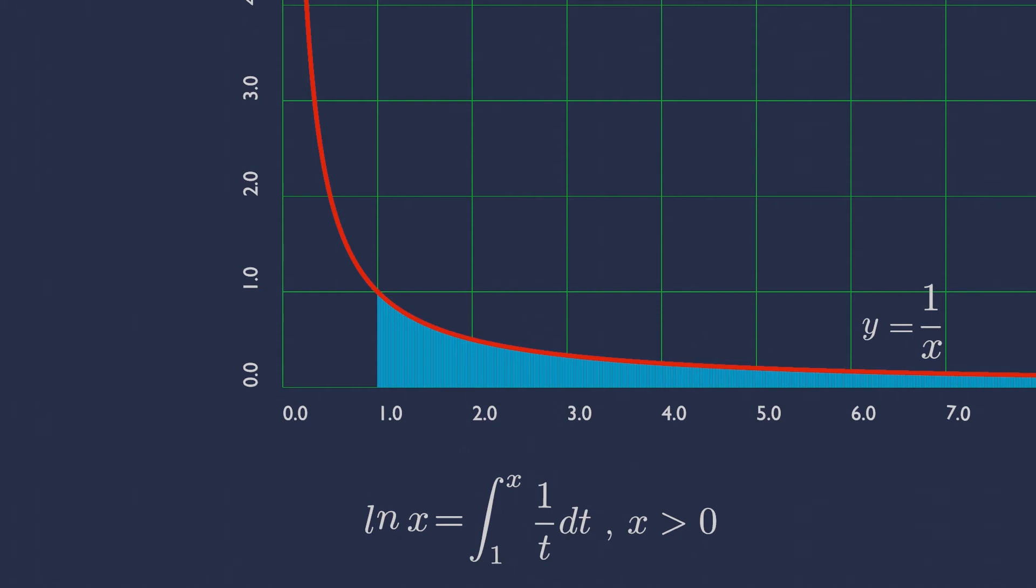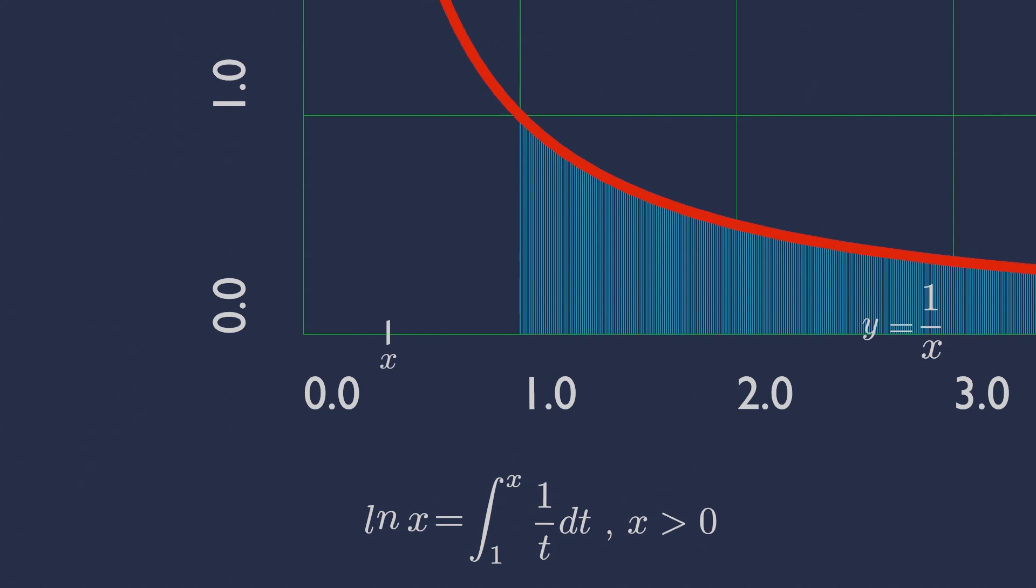For any variable x that is less than 1 and greater than 0, then integrating gives the negative of this orange area. So ln x gives the negative of the area under the curve from x to 1.